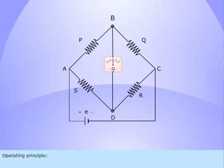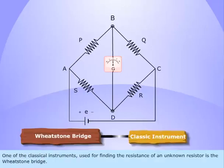Operating principle. One of the classical instruments used for finding the resistance of an unknown resistor is the Wheatstone bridge.